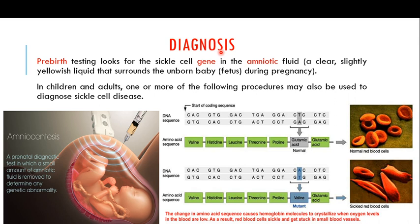One important method of diagnosis in the unborn baby or fetus is amniocentesis. This is a pre-natal diagnostic test in which a small amount of amniotic fluid is removed to determine any genetic abnormality. The fetus in the womb of the mother is surrounded by amniotic fluid — a clear, slightly yellowish liquid that surrounds the unborn baby during pregnancy.